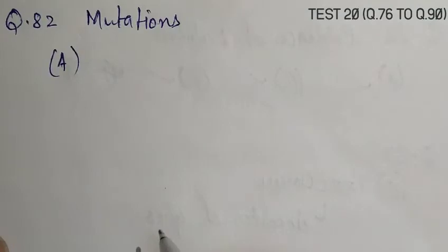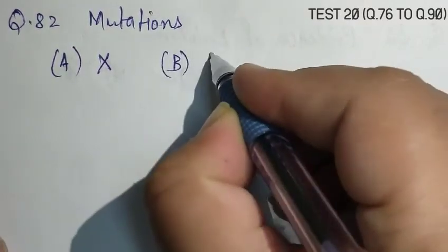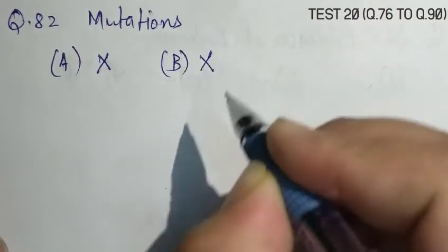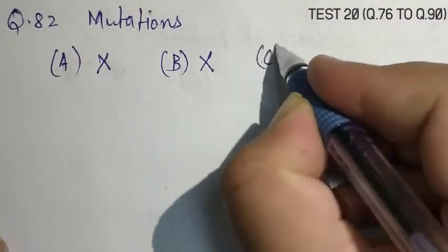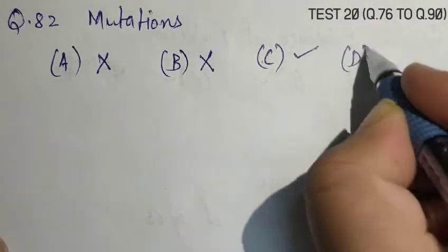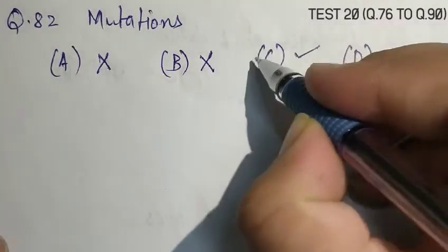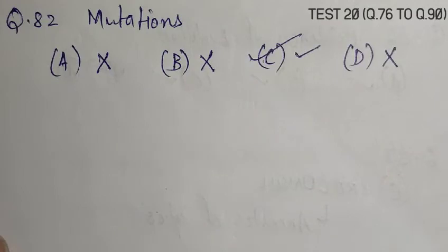Question number 82, Mutations are mainly responsible for. A. Increasing population rate, that is false. B. Maintaining genetic continuity, that is false. C. Variations in organism, that is correct. D. Extinction of organism, that is false. So, the correct answer is C. Mutations are the ultimate source of evolution.